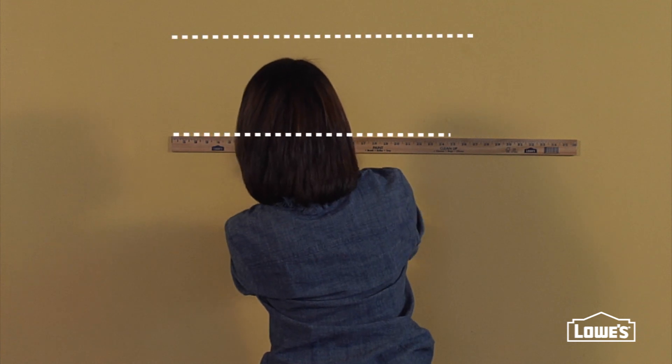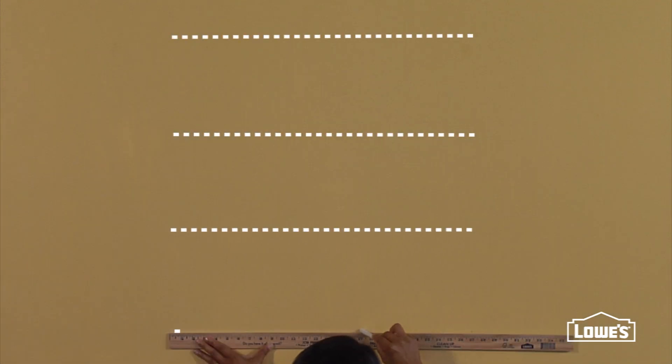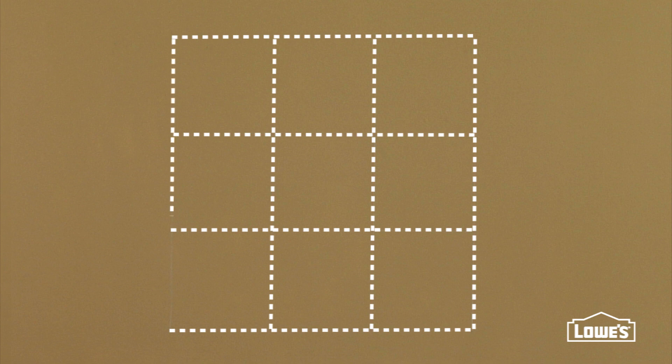Using chalk, measure and lightly mark a series of horizontal lines 9 inches apart. Using the same measurement, mark off vertical lines 9 inches apart. This creates a grid of uniform squares.